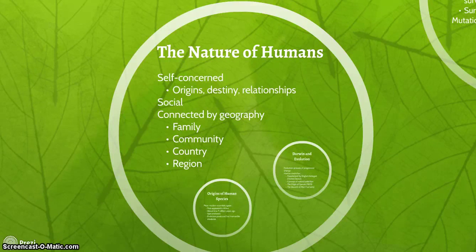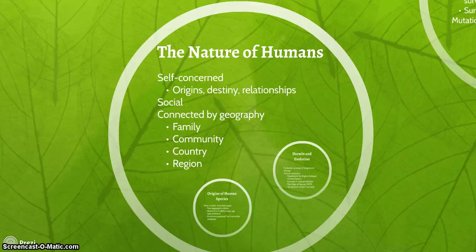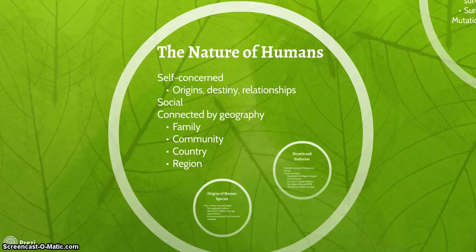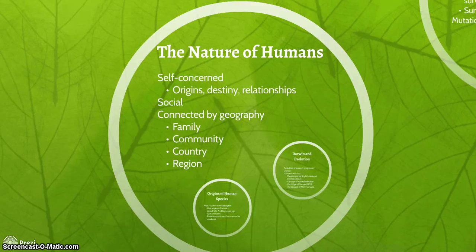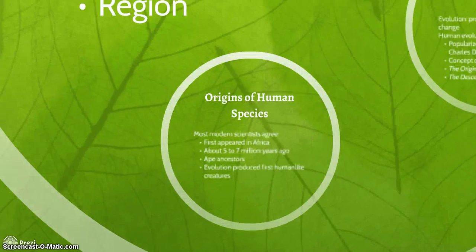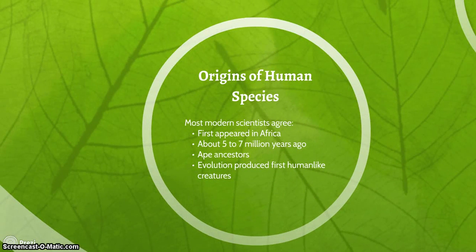The nature of humans is self-concerned in terms of our origins. We want to know where we came from. We want to know what our destiny is. We're concerned about relationships. What is the meaning of life? This is the human existential dilemma. Socially, we're connected by geography, family, community, country, and region, which is how human beings are.